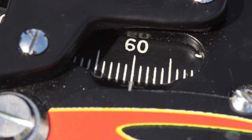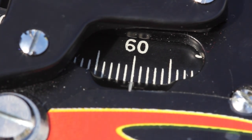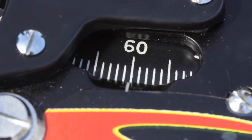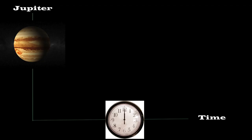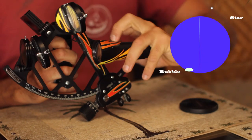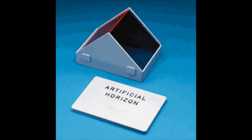Tip number two is to read the sextant correctly. Read it, write down the value, then do something else and read it again. It's easy to flip numbers and end up ruining your sight for a silly error. Tip number three is to average your sights. Take five measurements of the same body and either use graph paper or math to average the times and heights. You might be surprised how often there's an outlier that needs to get tossed out. If you don't live near the ocean, a bubble attachment or an artificial horizon is a good way to get some practice time in at home.